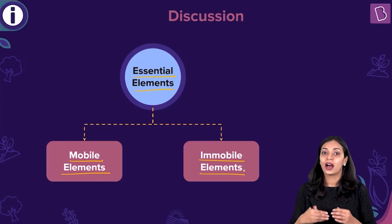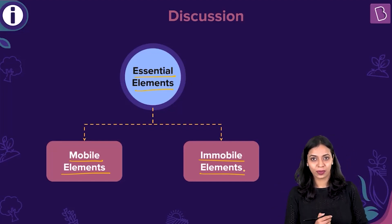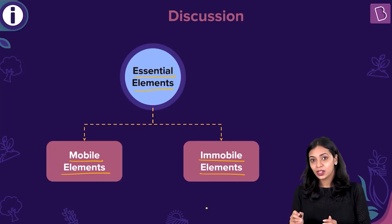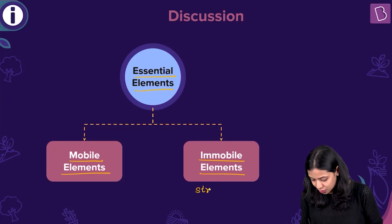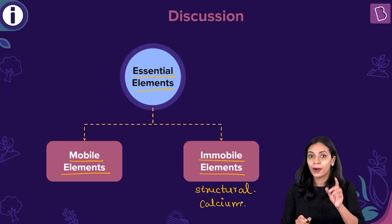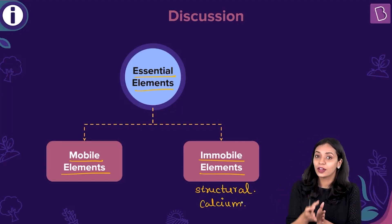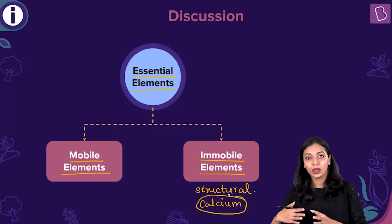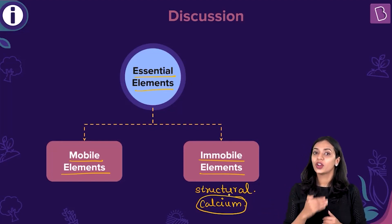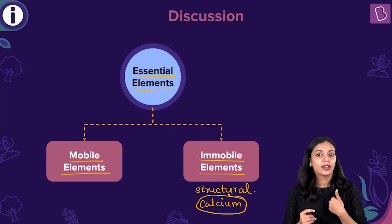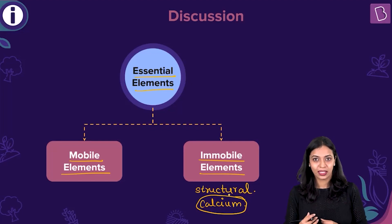Mobile elements are easy to be mobilized across different parts of the plant, whereas immobile elements cannot be transported from one part of the plant to another. The reason immobile elements cannot be mobilized easily is because they are generally part of the structural framework of plants. For example, calcium is a part of the cell wall. The first layer of the cell wall laid is the middle lamella, which is composed of calcium pectate. Therefore, it is not easy to mobilize calcium from one part of the plant to another, whereas elements like nitrogen, phosphorus, and potassium are easy to mobilize within the plant.